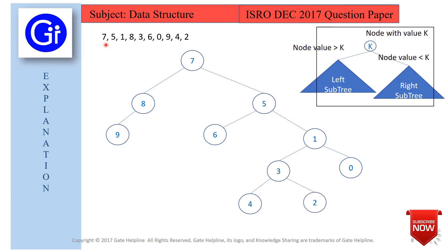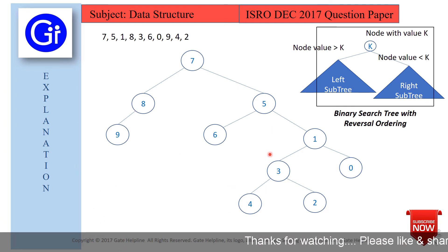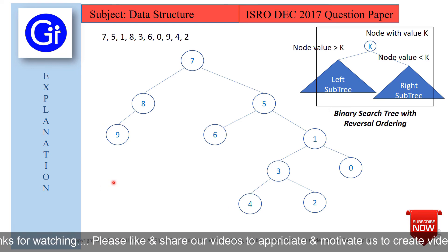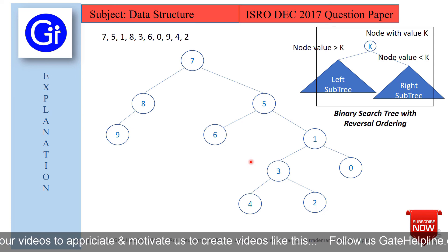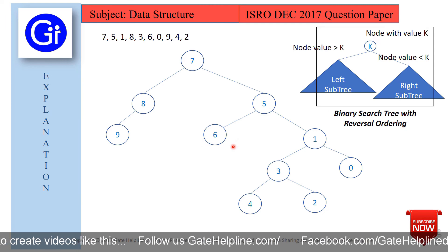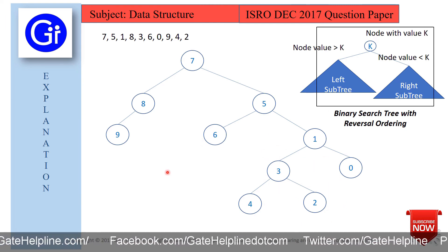All elements have been inserted and this is the resultant binary search tree. We verify that it has reversal ordering: the left subtree of node 7 has all nodes greater than 7, and the right subtree has all nodes less than 7. Similarly, for node 5, the left subtree has nodes greater than 5 and the right subtree has nodes less than 5. The same holds for all other nodes.